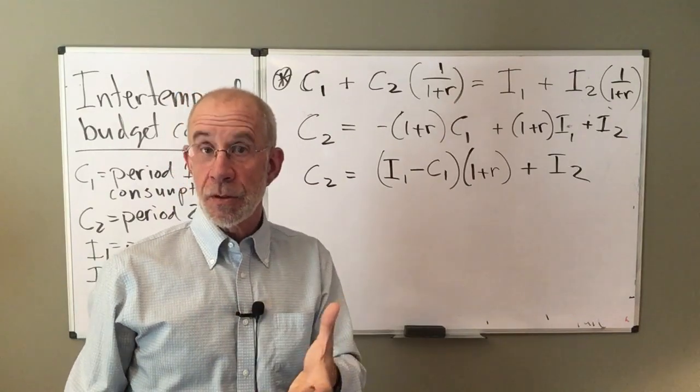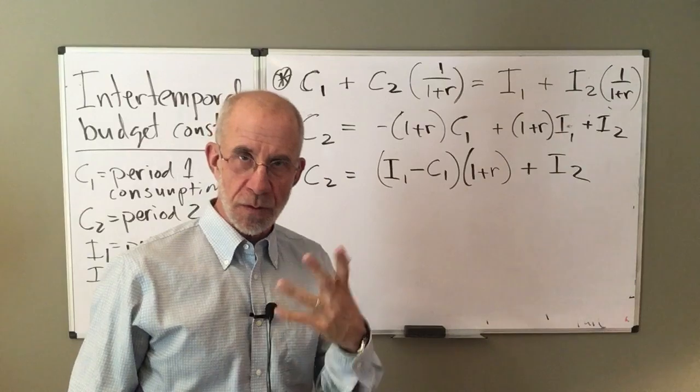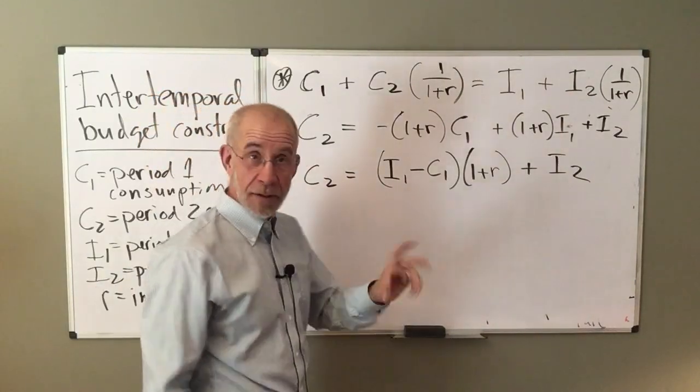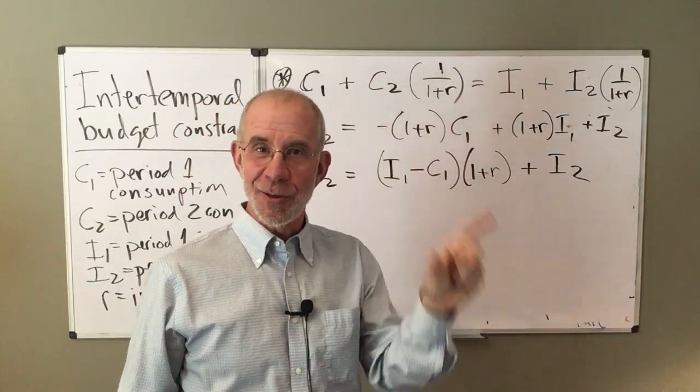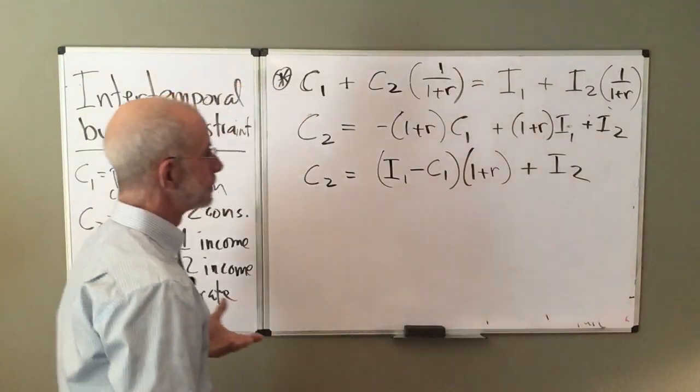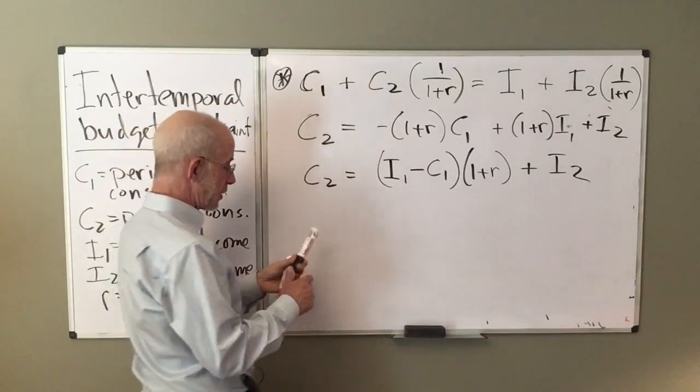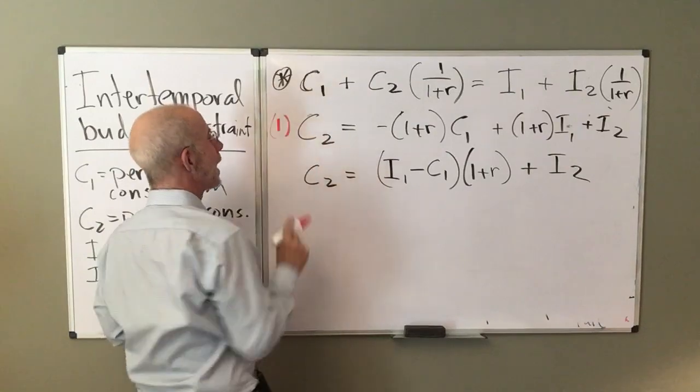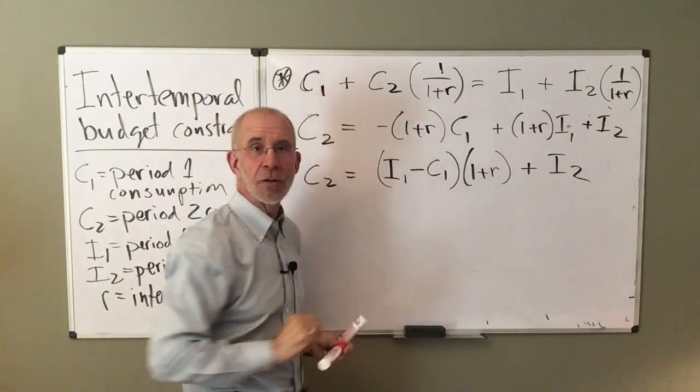Now ultimately, what we want to do is to graph this relationship. And there'll be some very useful things that we can do once we look at that budget constraint. And we'll have a sense of the relative price of consuming today versus tomorrow, very much like the one period budget constraint.